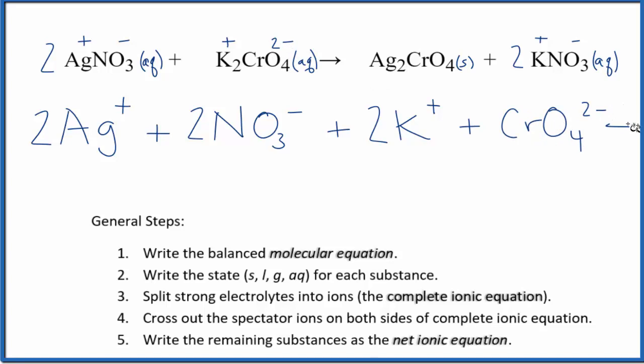So those are the reactants. For the products, we don't split the silver chromate up because it's a solid. So we'll just keep that as Ag2CrO4. And that's a solid plus potassium. There's two of those here. Plus the two nitrate ions.